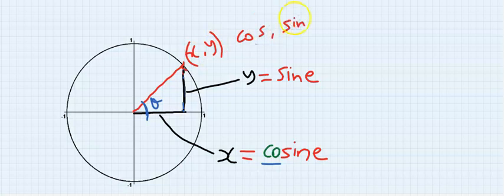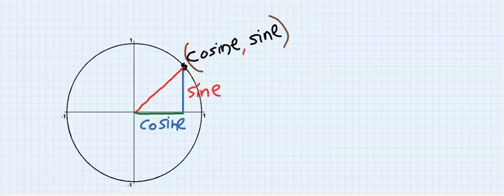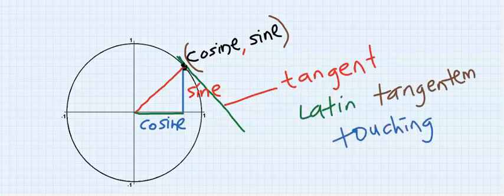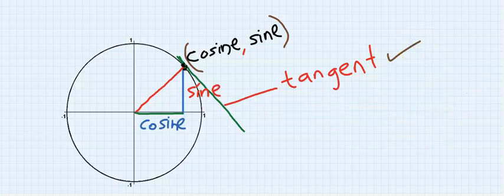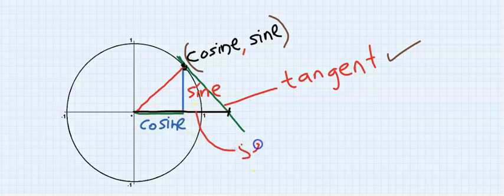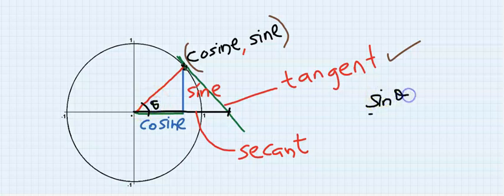Next, I'm going to draw a straight line from this point out of the circle. This line is called the tangent. Tangent is a Latin word meaning 'touching.' If I draw a line from this point to go and touch the tangent line, this new line I have drawn is what is called the secant line. We have already established the relationship that sine theta over cosine theta is equal to tan theta, which is y over x — equal to the slope.